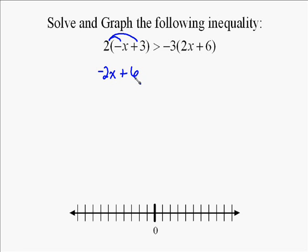The first step is to simplify using distributive property. So we multiply the 2 by the negative x and the positive 3 on the left side, and that gives us negative 2x plus 6. And then on the right side, we're going to multiply the 3 times the 2x and the positive 6. So negative 3 times 2 is negative 6, and negative 3 times positive 6 is negative 18.